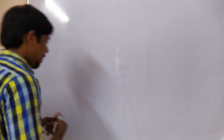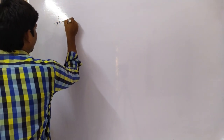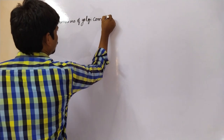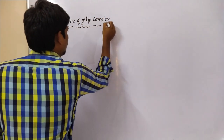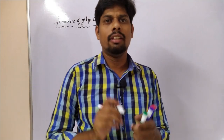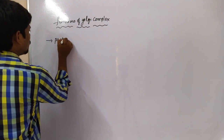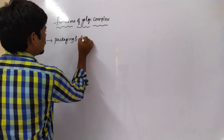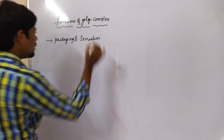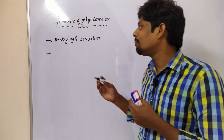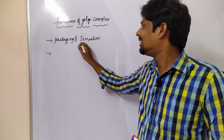Hello, hi my dear friends, welcome to my channel HSR Bioinfo. Today we are going to discuss an important concept — the functions of the Golgi complex. The main important function of Golgi complex is packaging and secretion. Here you can see these organelles packing material into vacuoles and finally secreting it to the outside.